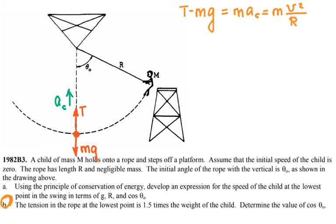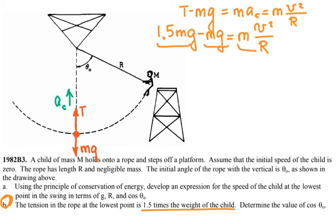So the tension at the weight, the tension at the bottom is 1.5 times the weight of the child. So here I have 1.5, so the tension is 1.5mg minus mg is equal to m v squared over R. All of them, all of them, there's one term, two terms, three terms, they will have m, so I can cancel m from every single one of them.